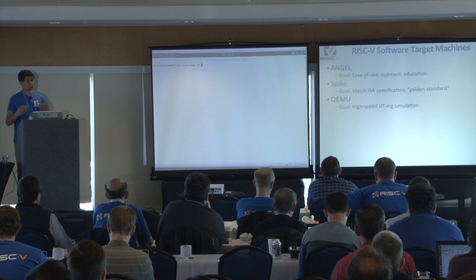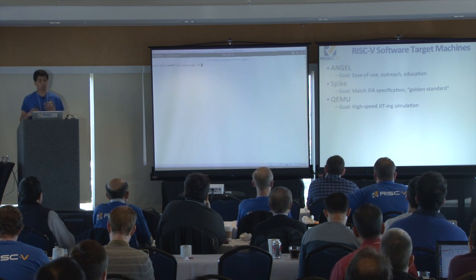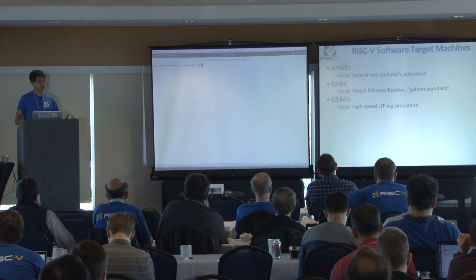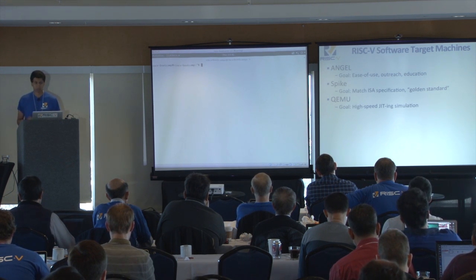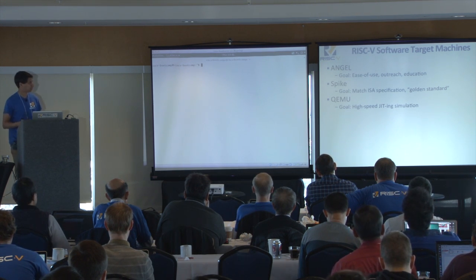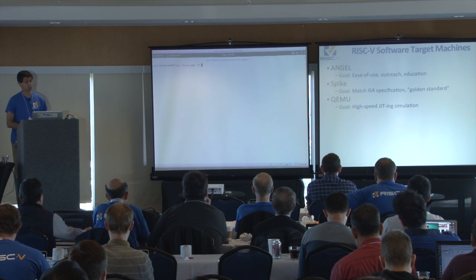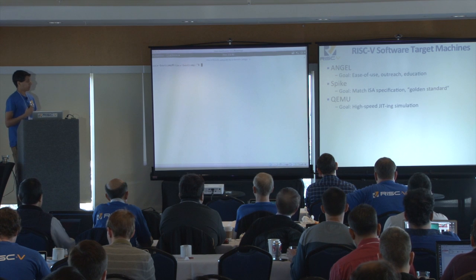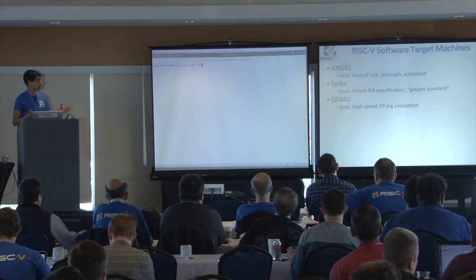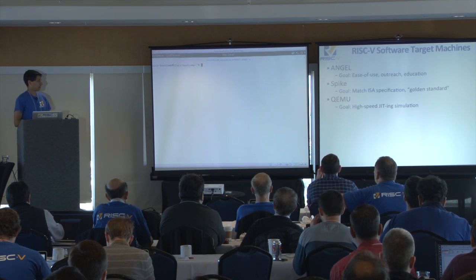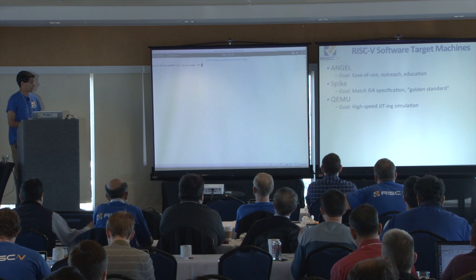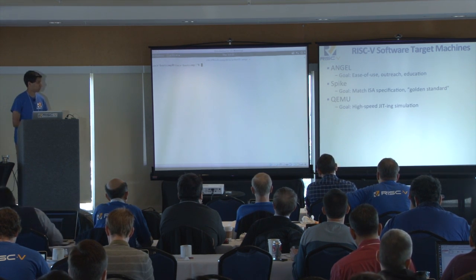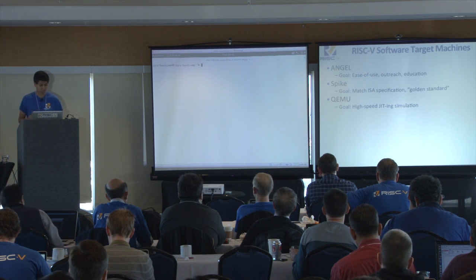Our target software machines — we have three out of Berkeley. The first is called Angel, designed more for outreach and education. You can try that out at riscv.org/angel and watch it boot Linux. Then we have Spike, which is our golden standard ISA simulator. And then we have QEMU, which is our port of the high-speed JITting simulator that you probably know about already.